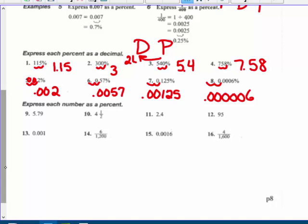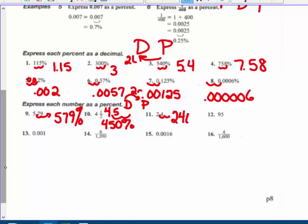Express each number as a percent. So now we're doing a decimal or fraction to a percent. And we're going to go two to the right. So two to the right means I'm going to get 579 percent. That's the same thing as four and five tenths. And two to the right would be 450 percent. Two and four tenths, two to the right would be 240 percent.